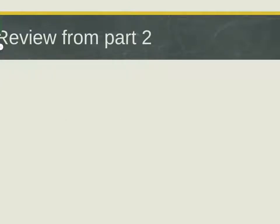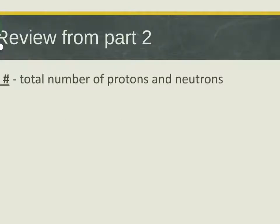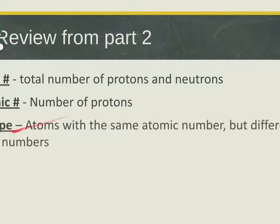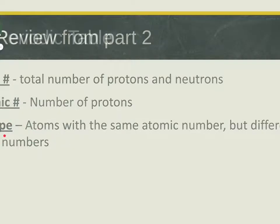Let's review some stuff from last time. The mass number is the number of protons plus the number of neutrons. Your atomic number is the number of protons. An isotope is atoms of the same atomic number but different mass numbers, and isotopes are the reason why we're doing what we're doing.